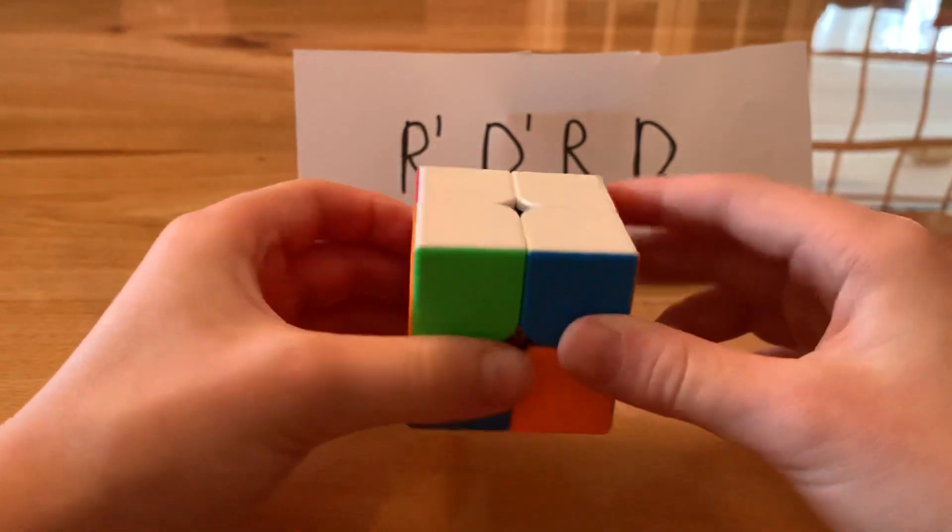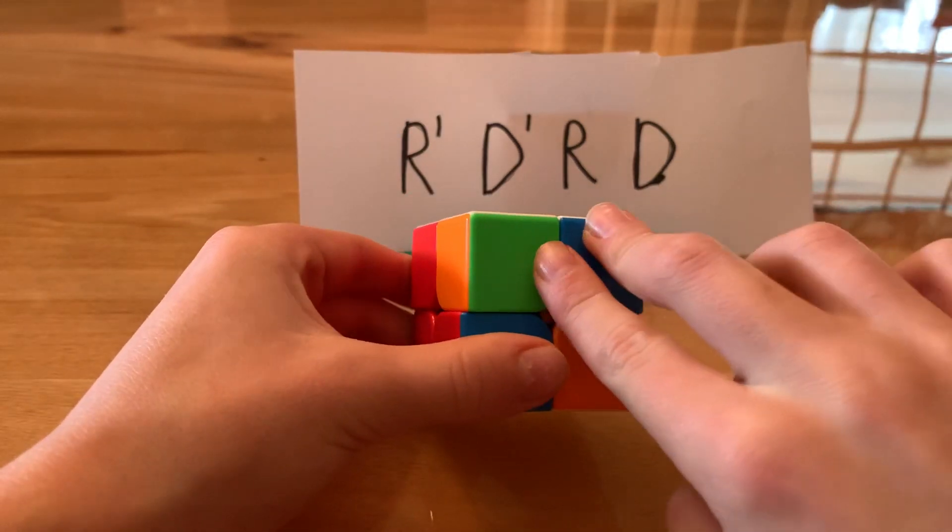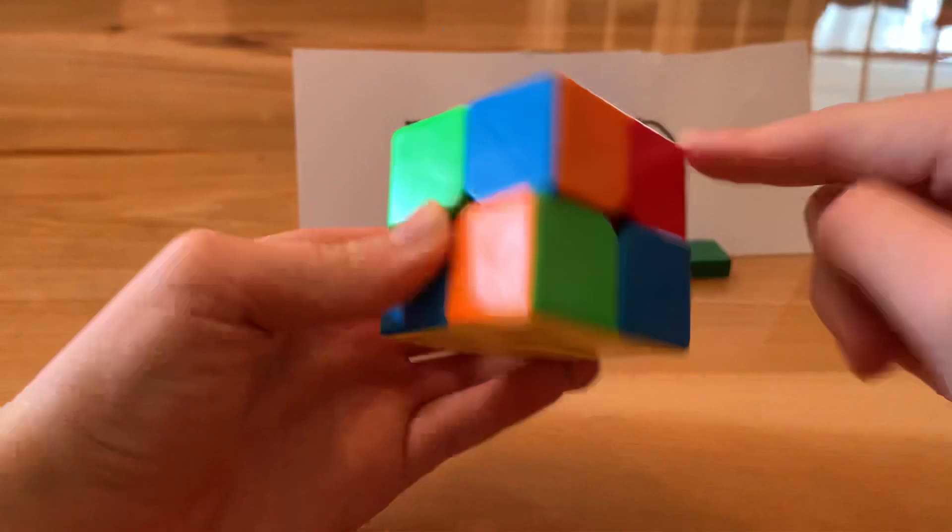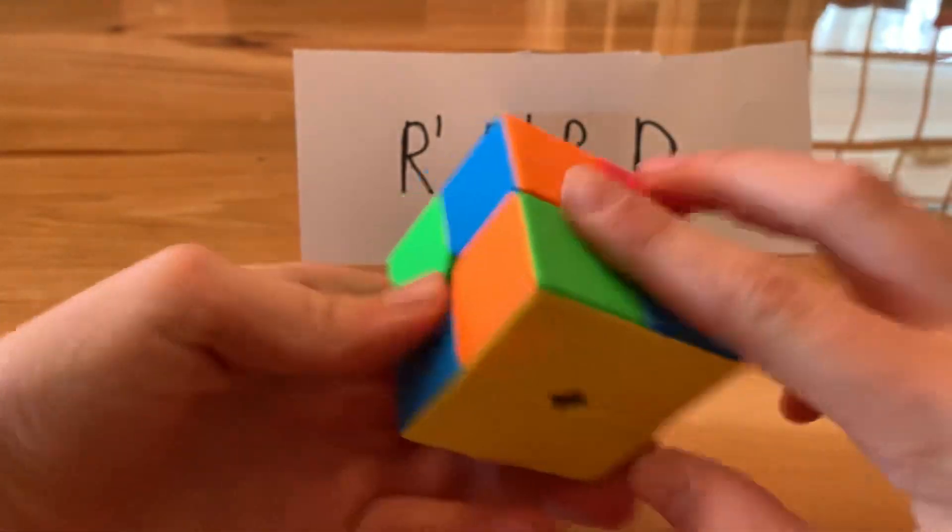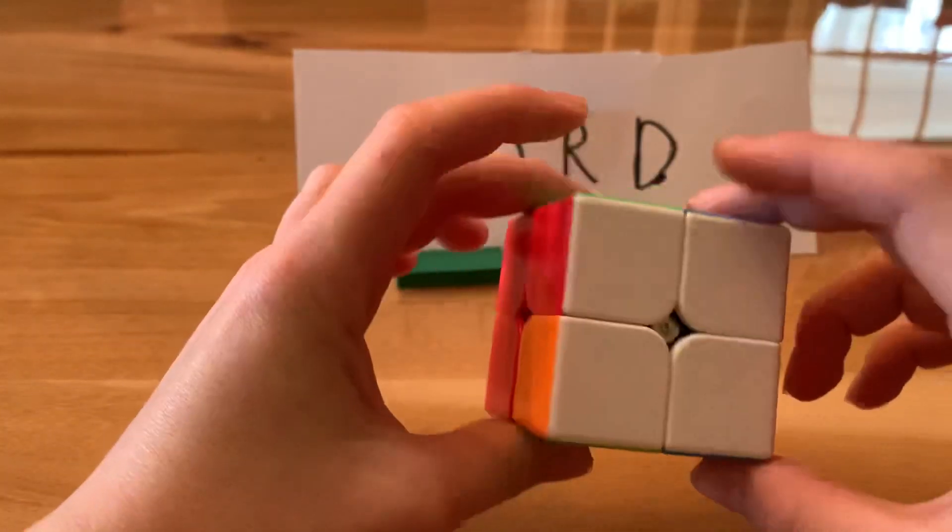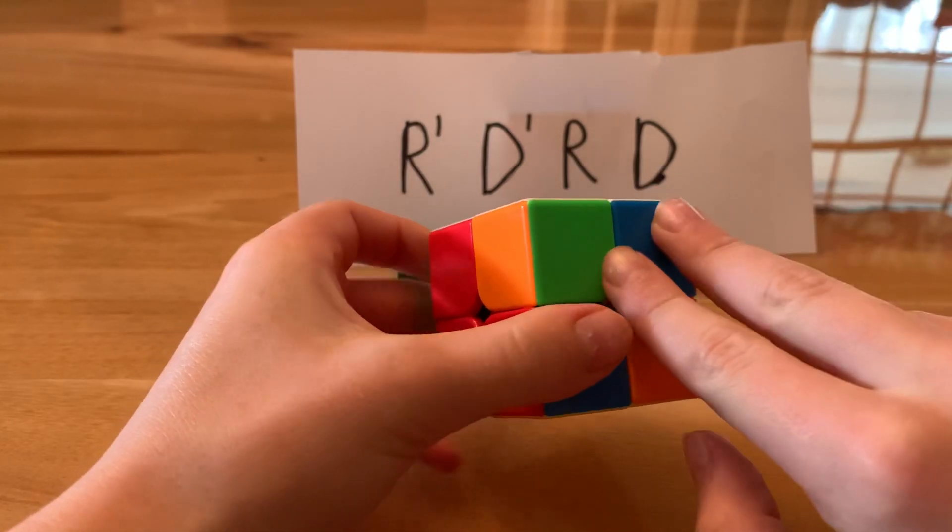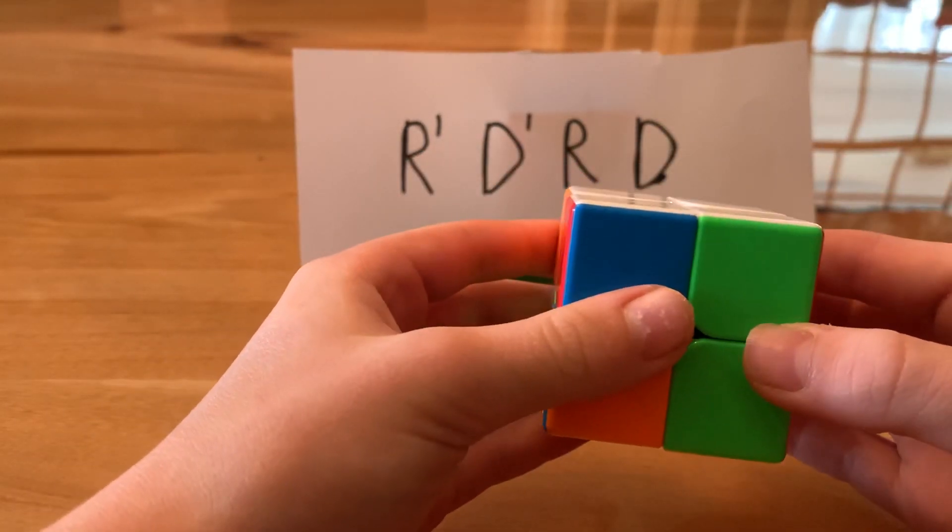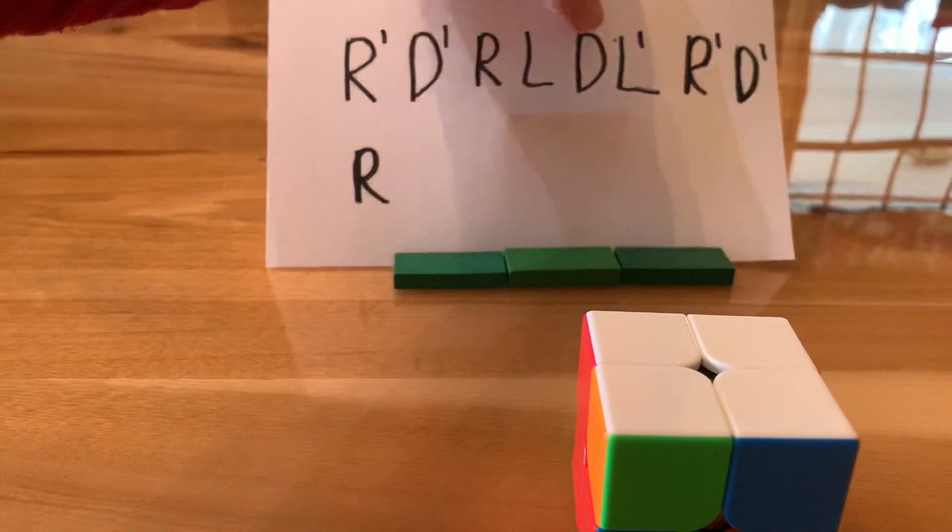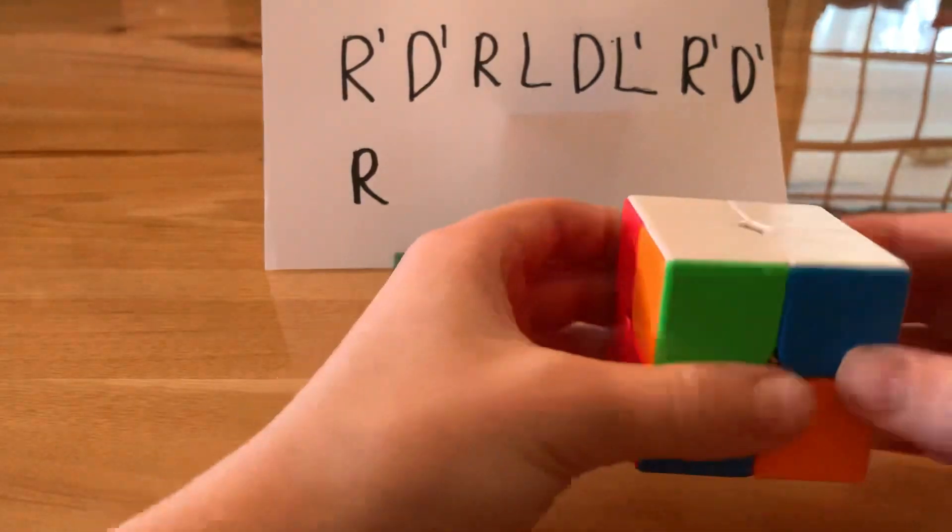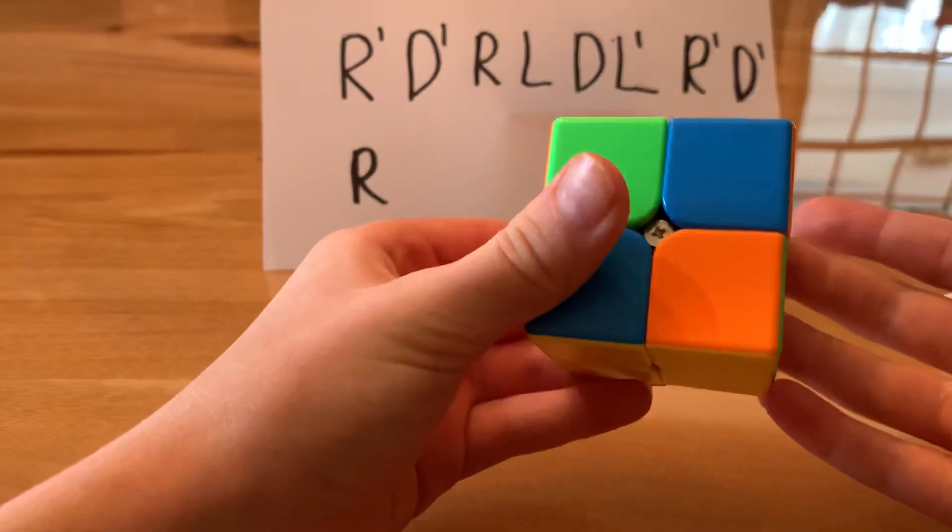So the next step is to get this first layer solved. This isn't solved because these will be one color on every side once it's solved. So what you do is you look for a pair already. So I don't have a pair, but that's fine if you don't. But look for a pair, and if you have one, face it away from you and then do the following algorithm. If you don't have a pair, then you just basically do the algorithm.